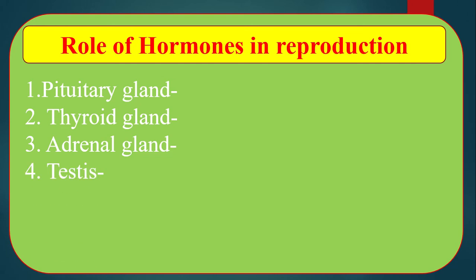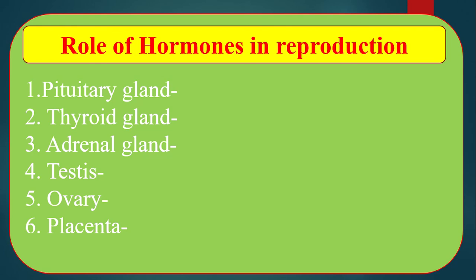Number 4: Testes. Testes is the male reproductive gland which produces testosterone, and testosterone helps in reproduction of the male body. Number 5: Ovary. Ovary is the female reproductive gland which produces estrogen and progesterone, helping in reproduction of the female body. Number 6: Placenta. Placenta is present in the female body especially during pregnancy and helps in reproduction.